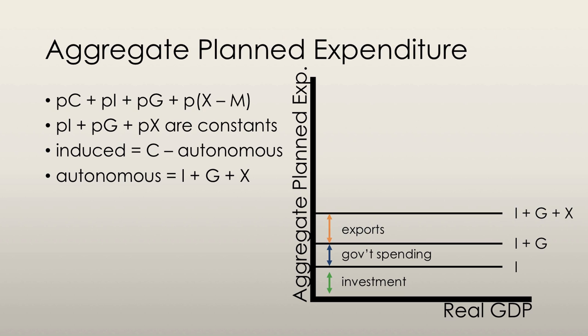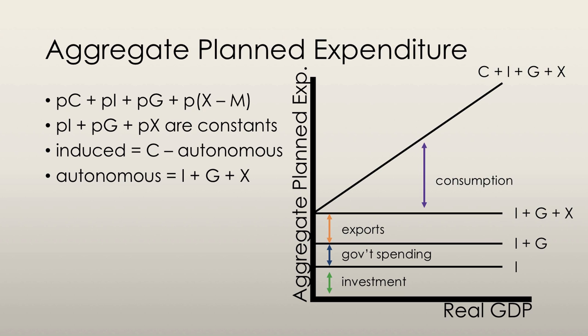And then we're going to add on consumption. All we've done here is we've added the consumption function to the level of investment plus government spending plus exports. So that sloped line that you see there is the consumption function added on to I plus G plus X.